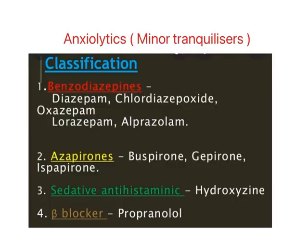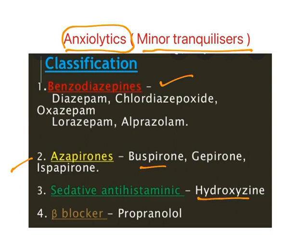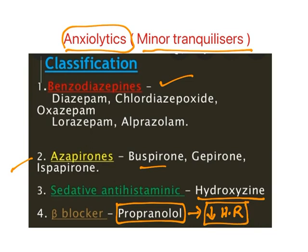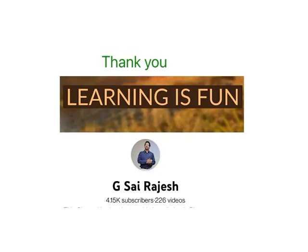Minor tranquilizers are known as anxiolytics. Major classes include: benzodiazepines — diazepam, chlordiazepoxide, lorazepam, alprazolam; azapirones — buspirone, zapirone, ipsapirone; sedative drugs like hydroxyzine; and beta blockers like propranolol. Propranolol reduces heart rate — since increased heart rate is a major symptom of anxiety, reducing it helps control anxiety. These are also known as minor tranquilizers.